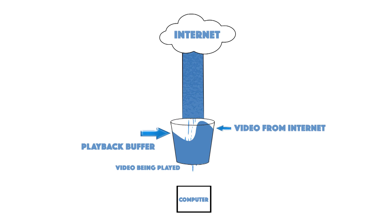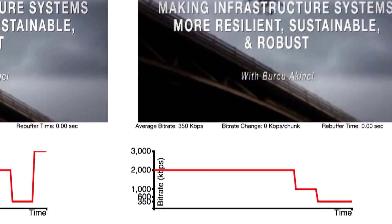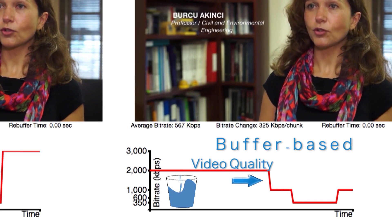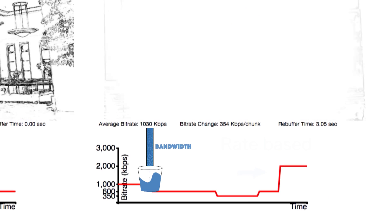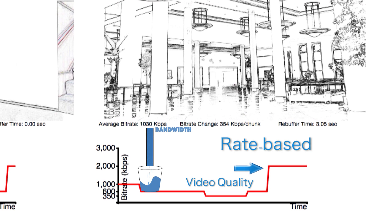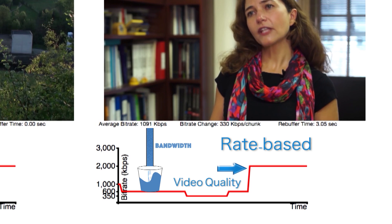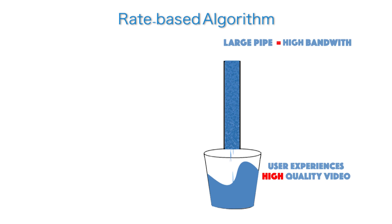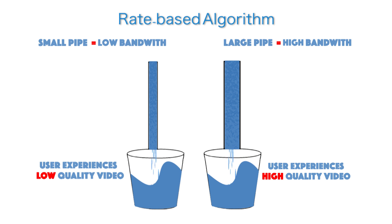Traditionally, there were two approaches. One is called buffer-based: it looks at the quantity of water in the bucket — the amount of video you have stored — and based on that, it requests the next chunk of video. The second approach is called rate-based. Bandwidth is like the pipe that fills up this bucket, and the rate-based algorithm looks exclusively at this pipe. If it perceives high bandwidth, it requests high-quality video; if the pipe is small, it requests lower-quality video.